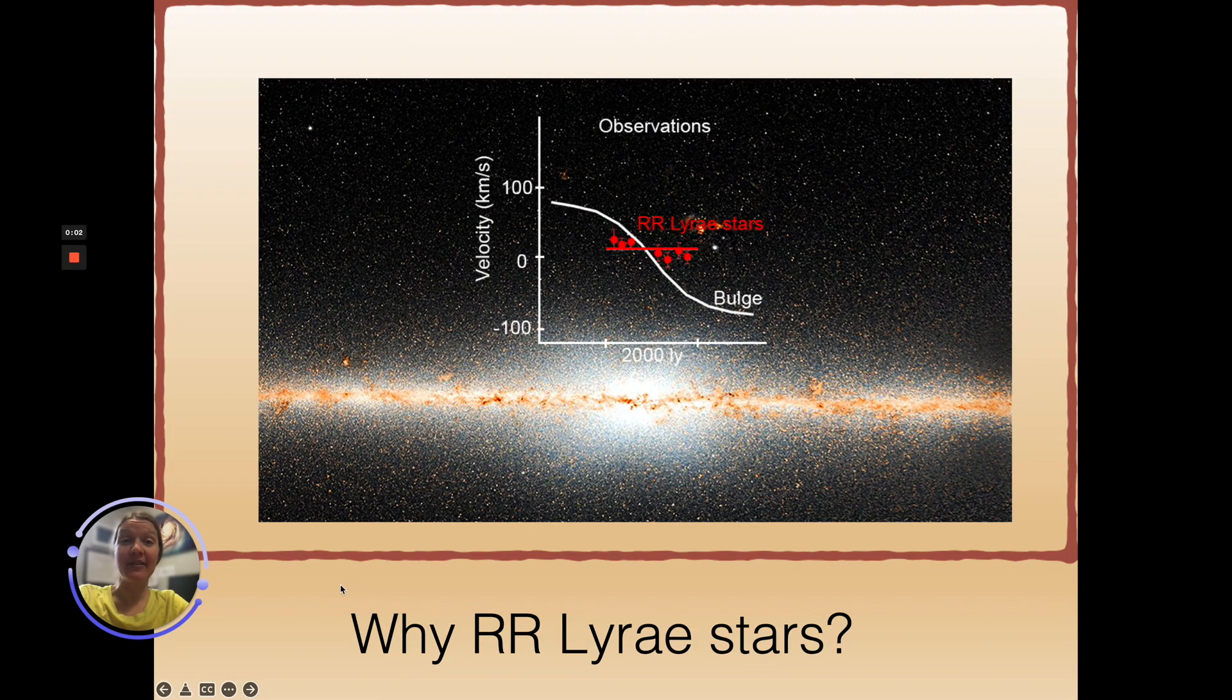Why should you listen to a talk about RR Lyrae stars? Well, because bulge RR Lyrae stars are fascinating nonconformists. Whereas modern wide-field spectroscopic surveys of the bulge have shown that the bulge is rotating as a separate component with a rotation curve that is shown by this white line here, the bulge RR Lyrae stars do not follow such a rotation curve. Instead they are a non or slow rotating population, and they have properties consistent with the existence of an older bulge spatially coincident with the massive barred bulge.